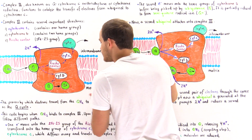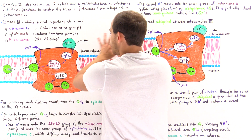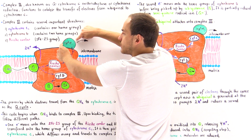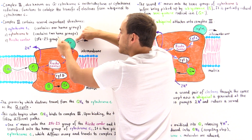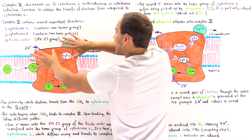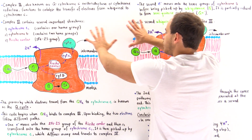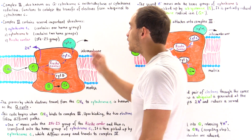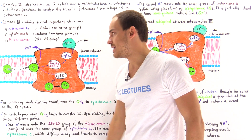The inner membrane of the mitochondria has complex three on the matrix side, and the intermembrane space is on the other side. When the oxidized cytochrome C is reduced by accepting a single electron, it detaches and, because it is diffusible in water, it travels through the fluid and eventually attaches onto complex four on the intermembrane side, as we'll see in the next lecture.